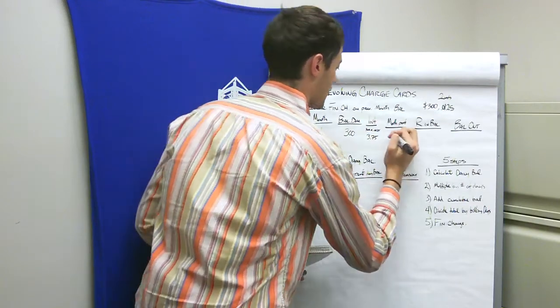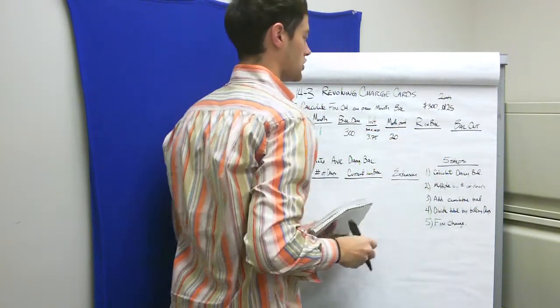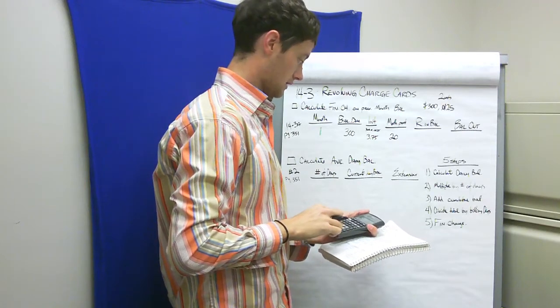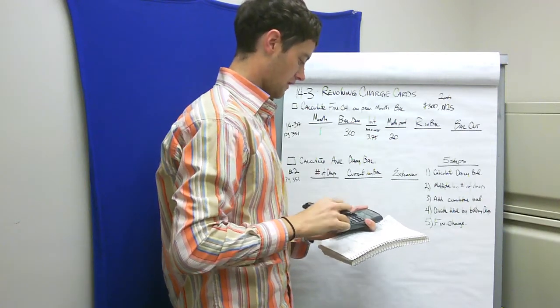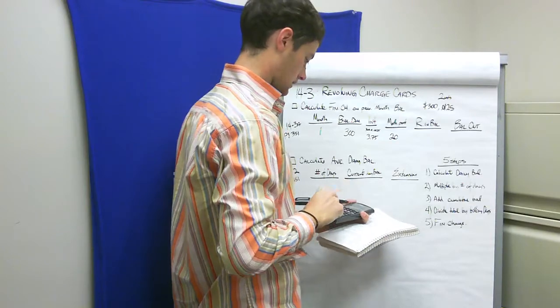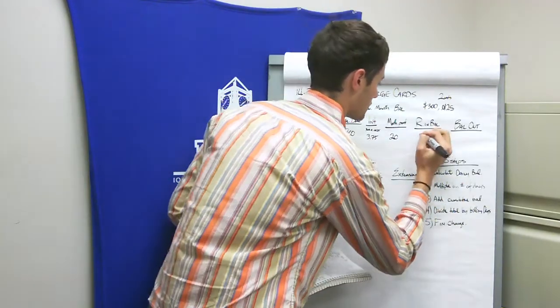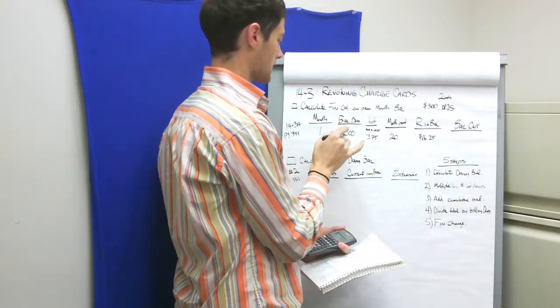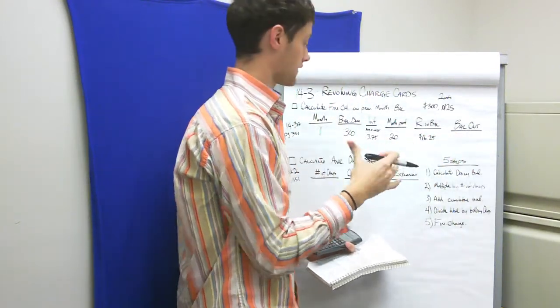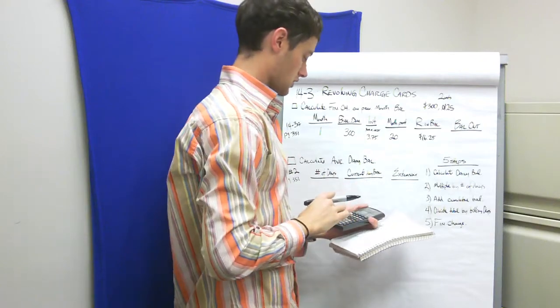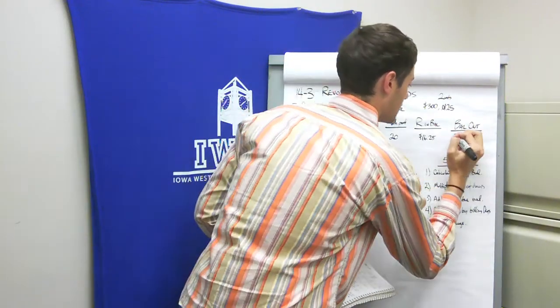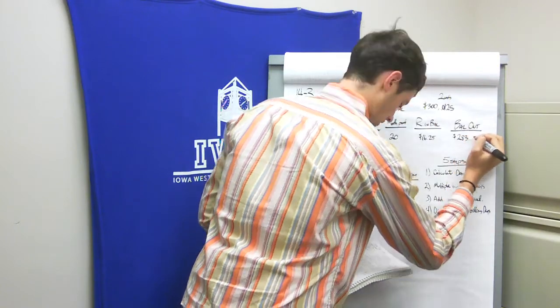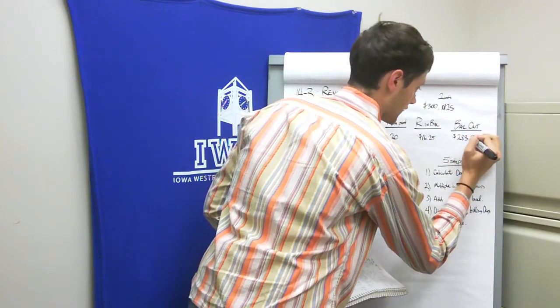Our interest is $300 times 0.0125, which is $3.75. My monthly payment is $20. What actually goes to the principal? $20 minus $3.75 is $16.25. So $16.25 is going against the $300 because we had to pay off the interest of $3.75. When I subtract that, my balance outstanding after the first month is $283.75.